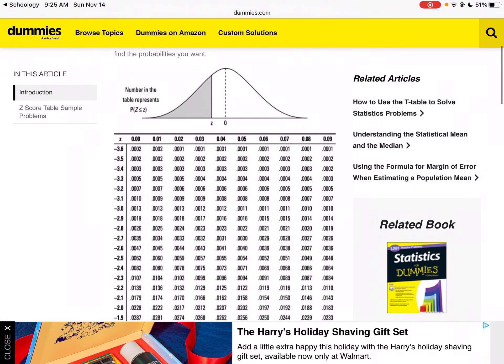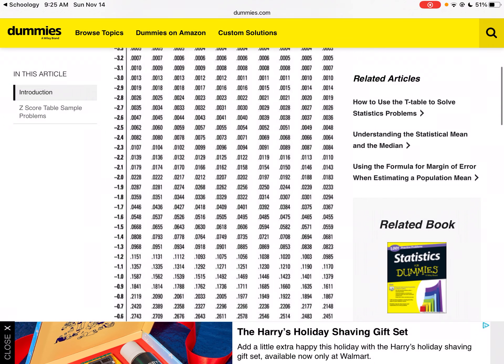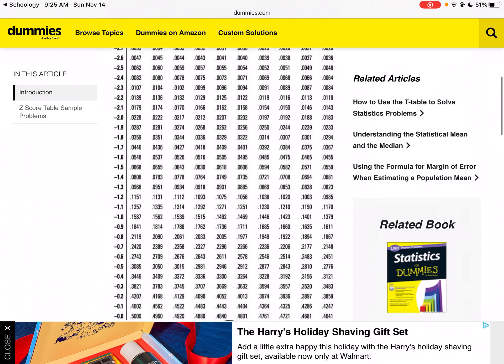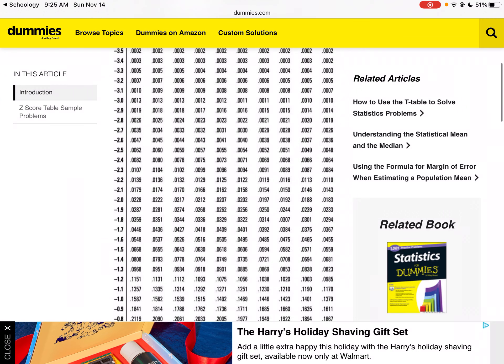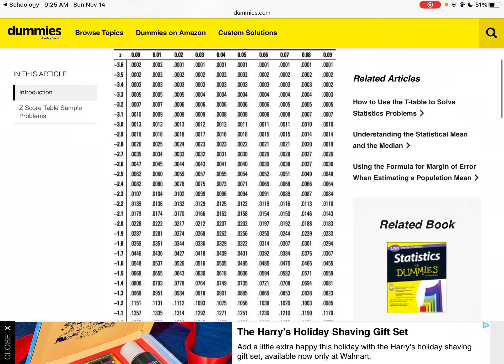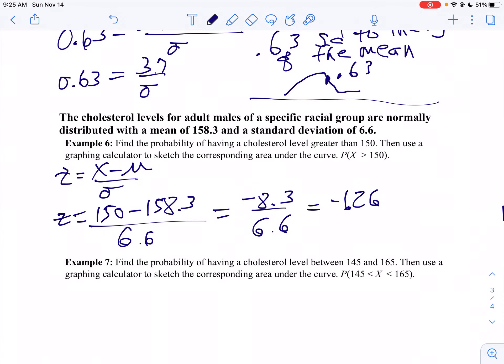So here's how I read the table. I want to find negative 1.26. So I look at my table. I go down to negative 1.2, and you see negative 1.2 there? And then I notice it goes 1, 2, 3, 4, 5, 6. So can we see it right there? So negative 1.26 is 0.1038. That's to the left. So the probability that you're to the left is 0.1038.